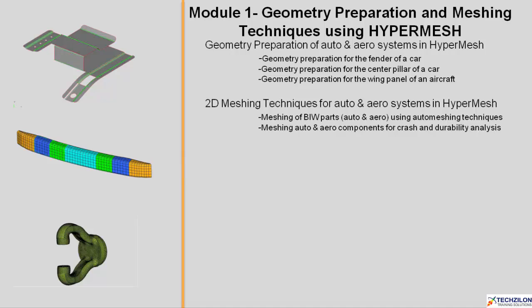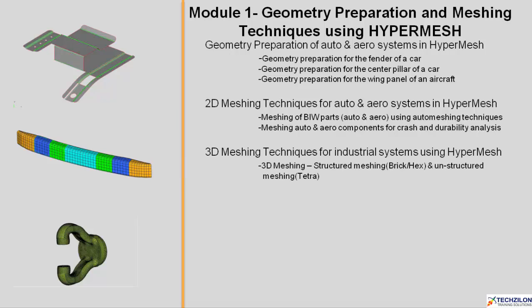We will later move on to 3D meshing techniques for industrial systems using HyperMesh. This will consist of 3D meshing — structured meshing with brick or hexa elements, unstructured meshing with tetra elements, and 3D mesh generation for industrial systems.